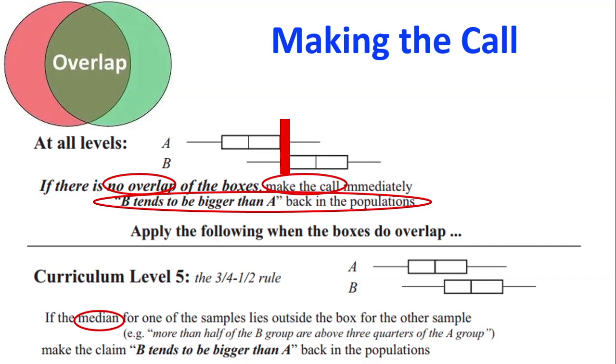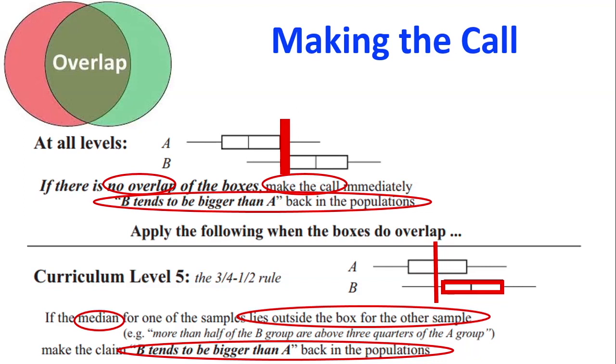But what happens when they're a bit closer together? So this is when we're looking at the median. If the median of one of the samples, and I've just drawn on there the median for A, if the median of that lies outside the box of the other sample. So now I'm going to draw a red box around group B. And you can see here that the median for A doesn't cut through that box. So it means it lies outside of that box. Then I can make the call for that. And I can say that B tends to be bigger than A back in our population.